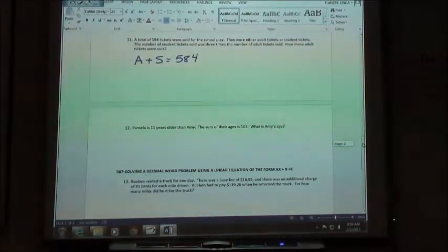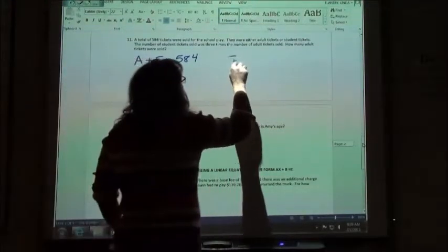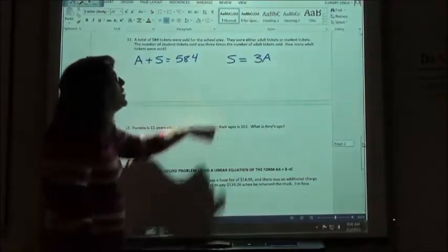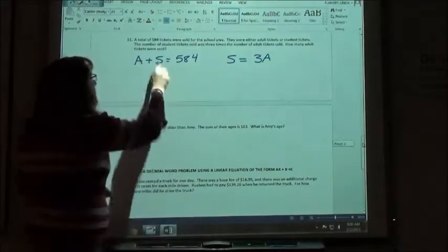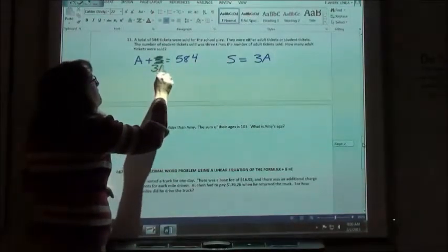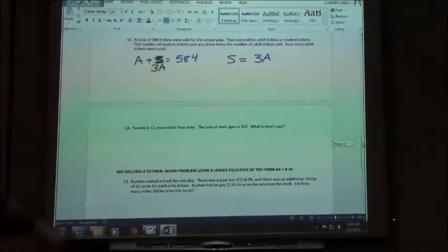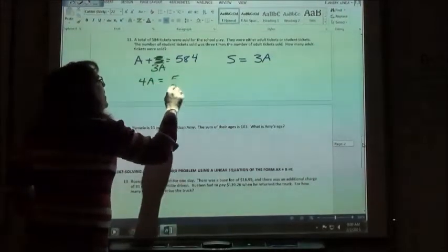The number of student tickets sold was three times the number of adult tickets sold. So whichever one's mentioned first, in this case the student tickets, is going to be equal to the other part of my equation. The number of student tickets sold was three times the adult tickets. How do I show three times the adult tickets? 3A. So I've got my two equations. I'm going to solve by substitution. I'm going to replace the S with 3A. And then I'm going to combine any like terms I have over there on that left hand side. Well, I have an A plus a 3A, which gives me 4A to equal my 584.